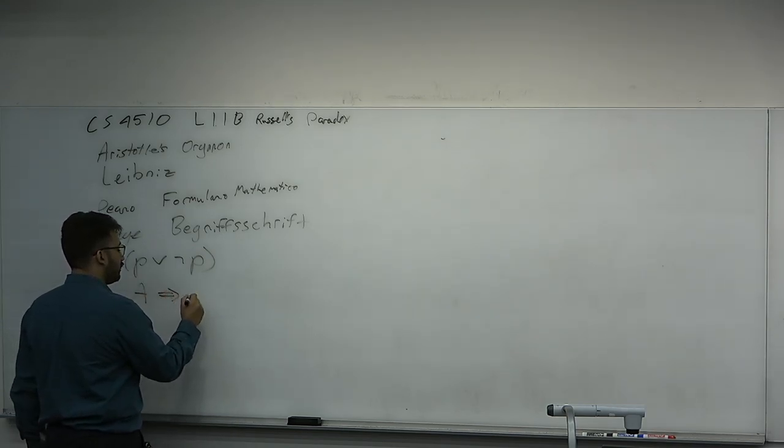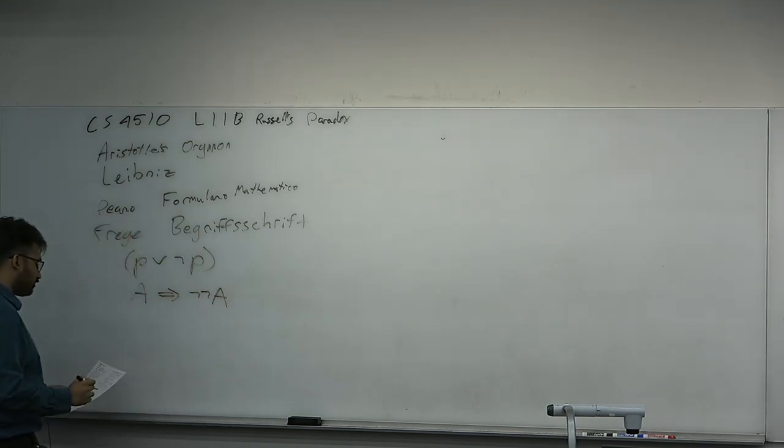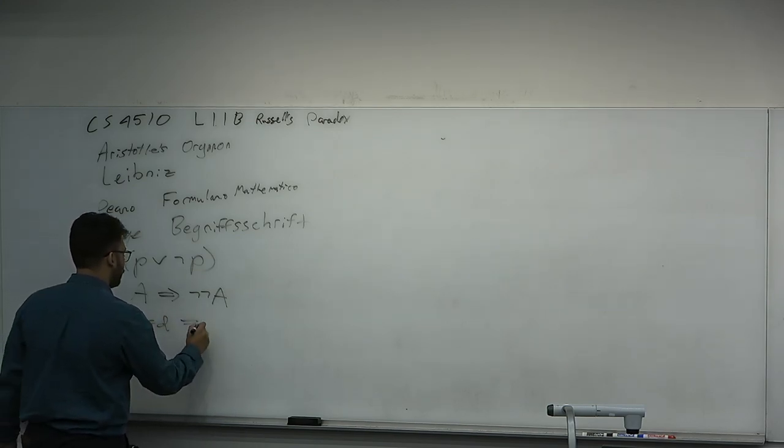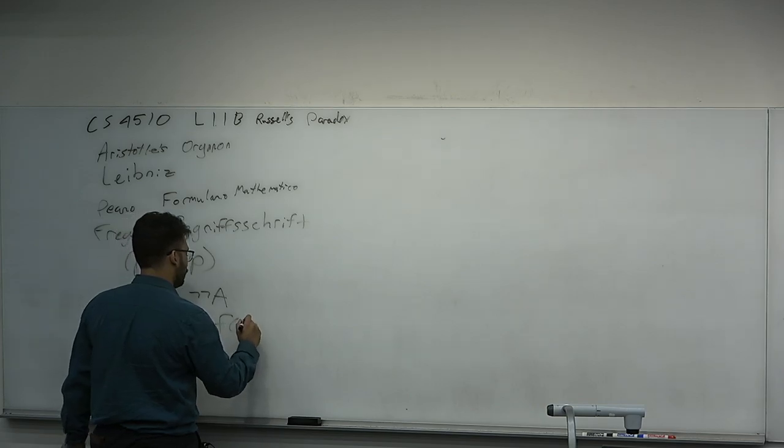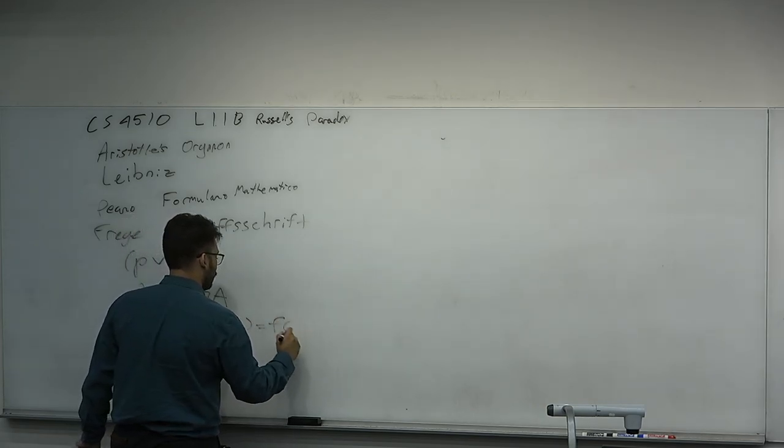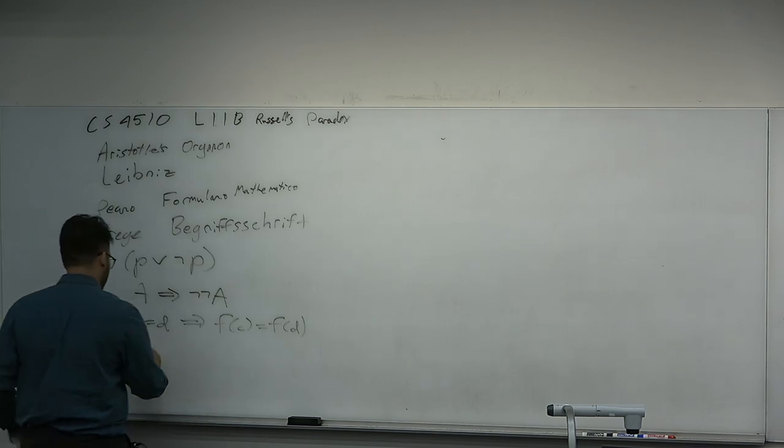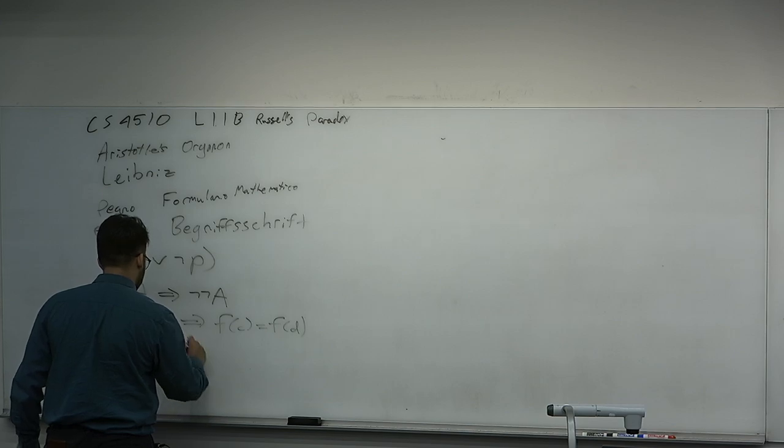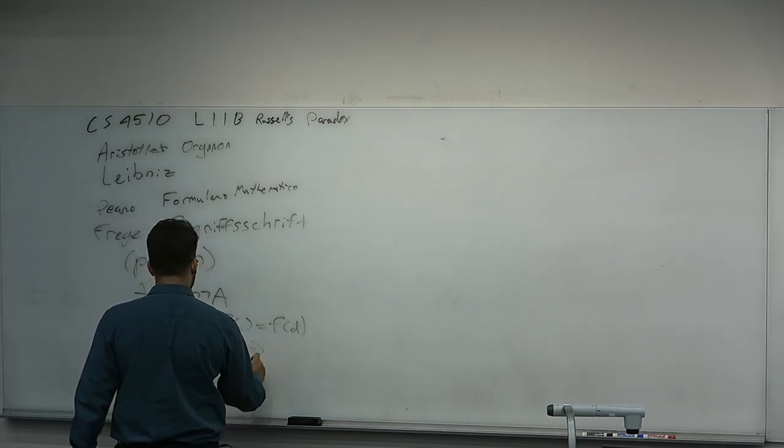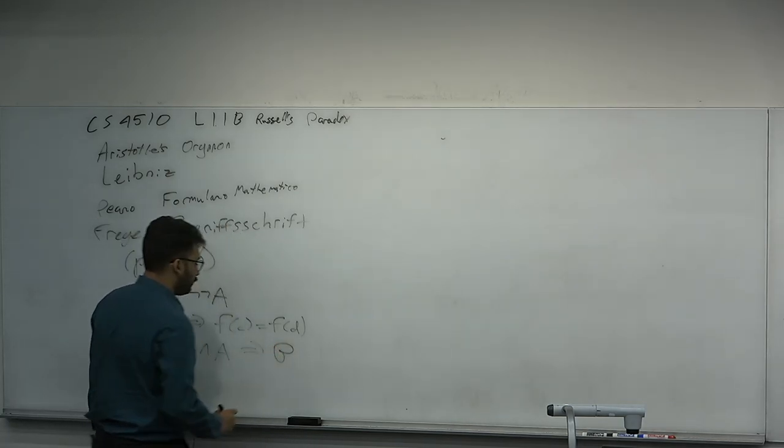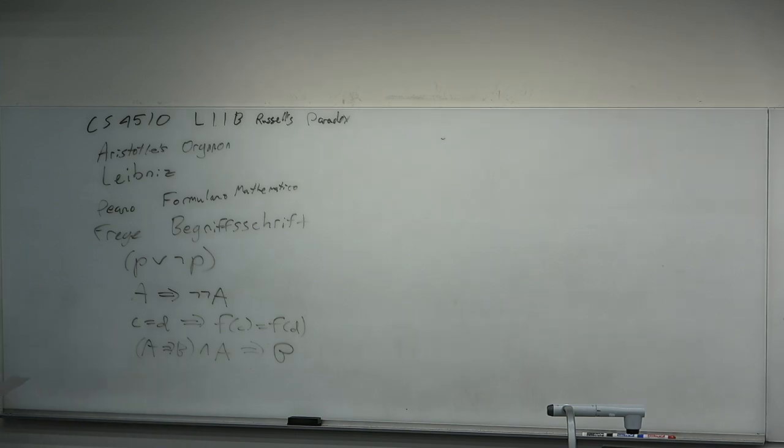A lot of the axioms that we use today are, in fact, taken from him. And it's sort of a primitive system. I'll list some of them for you. A implies not not A. It's interestingly, I don't have that down as a bijection. C equals D implies F of C equals F of D. Certainly true. You may have used that without even realizing it's an axiom, but it is. And of course, A implies B, and A implies B. Modus ponens again. We can credit that to him. Hypothetical syllogism.